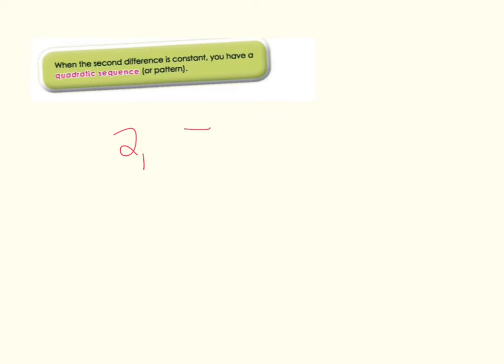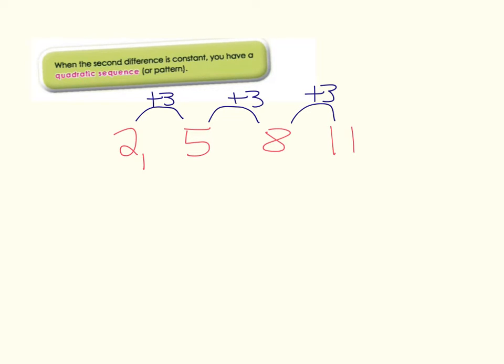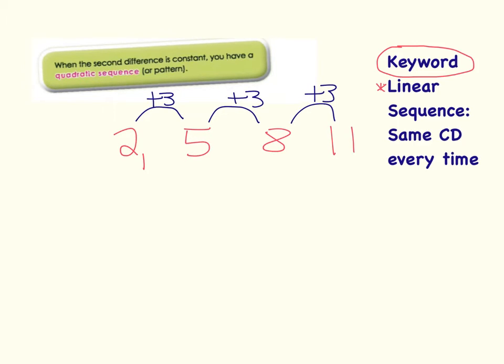We've met key terms before, like a linear sequence. A linear sequence is one where you have the same common difference between terms. An example of a linear sequence would be 2, 5, 8, 11 — you can see the common difference, or CD, is plus 3 each time. That's what we call a linear sequence. Another way to phrase this is that the first difference is always the same — it's always going to be plus 3.